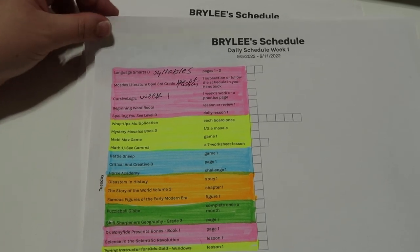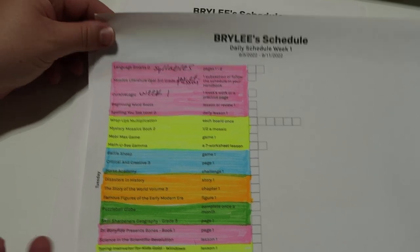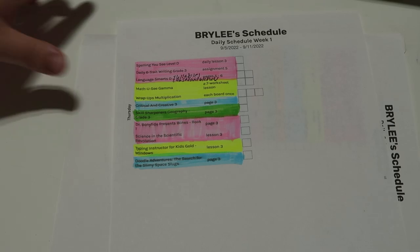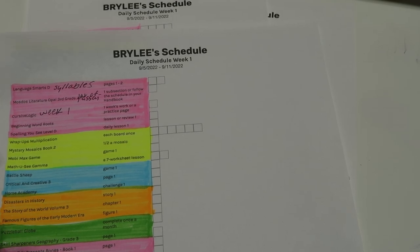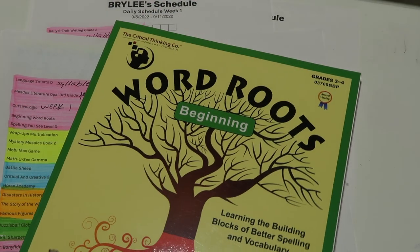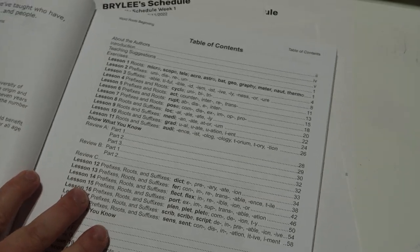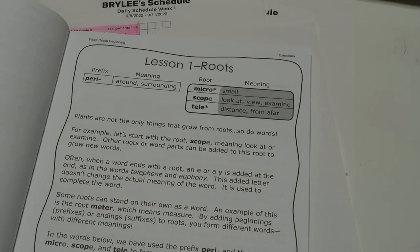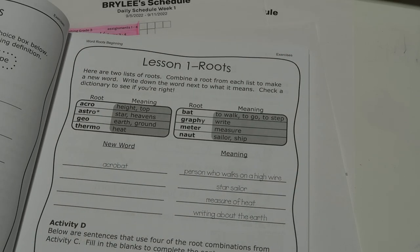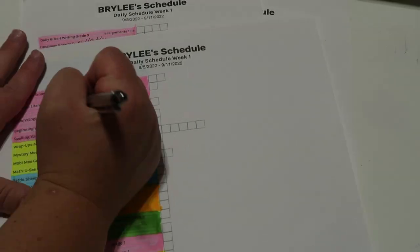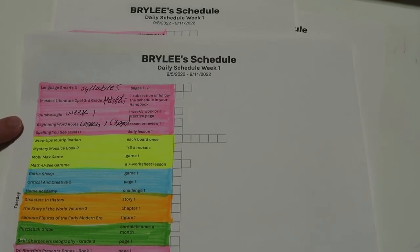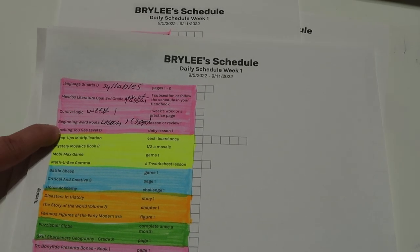Then we have Beginning Word Roots — that will just be on Tuesday. It's lesson one, also called Review One, which has three pages. I put three pages on there for lesson one.